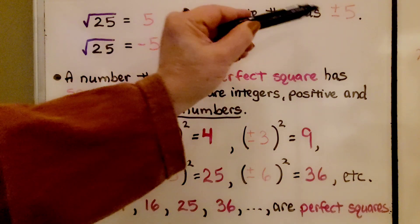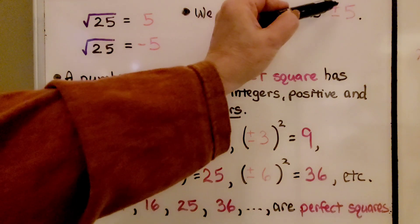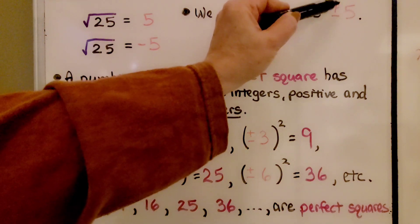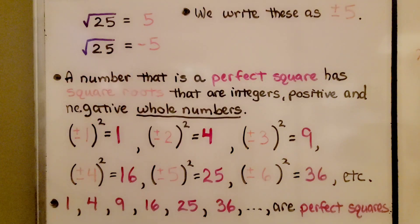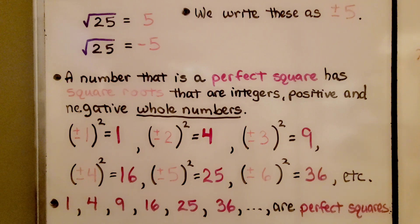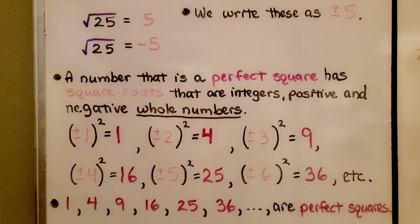We can write these with a plus and minus sign to the left of the 5, to show that it's positive or negative 5. A number that is a perfect square has square roots that are integers — positive and negative whole numbers. Remember, that's what integers are.